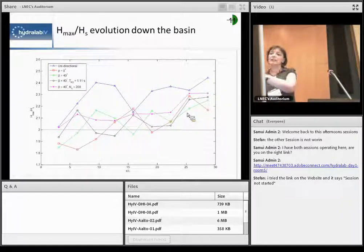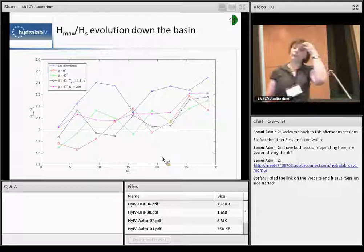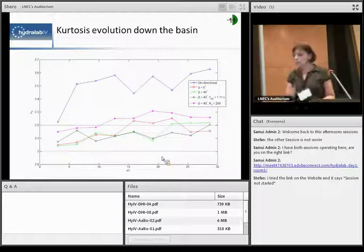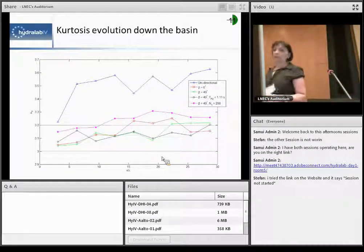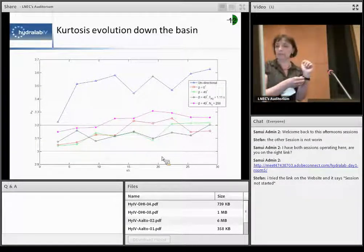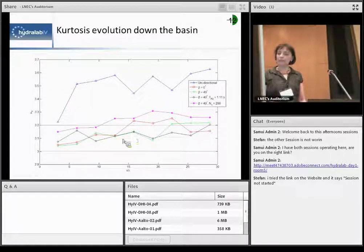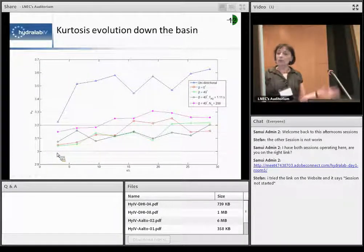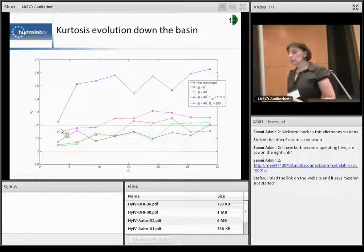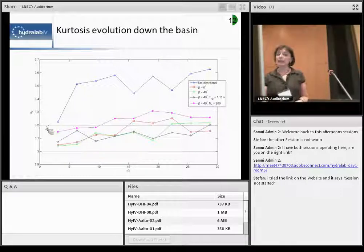Kurtosis is a statistical property which is very often used for indication of nonlinearities and indication of presence of the rogue waves. And what we plotted here is kurtosis of those waves that we measured. And for a Gaussian sea state, the kurtosis value is 3. If we use the second order theory and the presence of bound waves, the expression for kurtosis in those cases gives us 3.2. And higher kurtosis means we probably have more free waves and nonlinear interaction between those free waves.